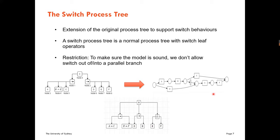The switch process tree is an extension of the original process tree to support switch behaviors. It is basically a normal process tree plus a switch leaf operator. The switch leaf operator defines the source activity and the destination activity of the switch behavior. When combined with the exclusive choice operator, we are able to model the ability to switch between different exclusive choice branches.